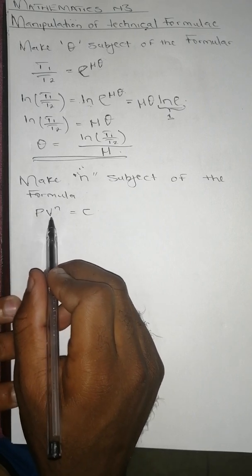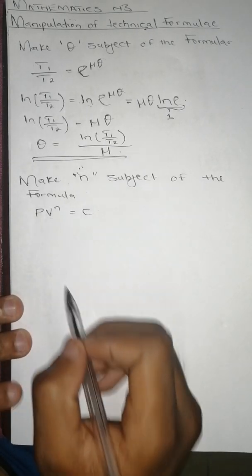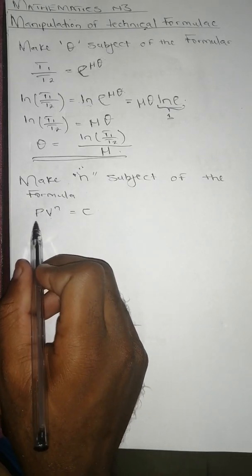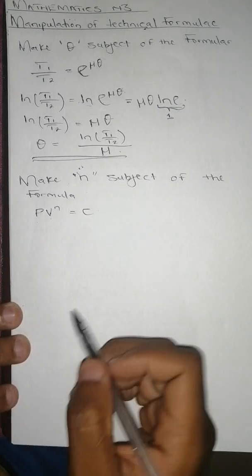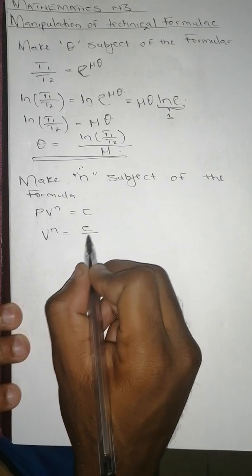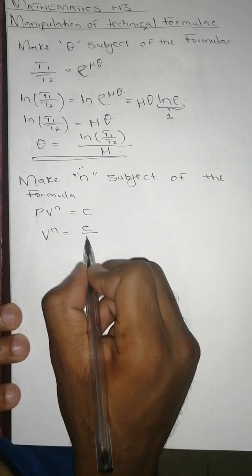The second question we're given PV to the power n equals C, and we're told to make n subject of the formula. So first we'll divide both sides by P so that we are left with V to the power n on the left side. So it's going to be V^n equals to C over P.